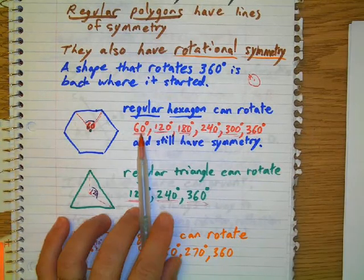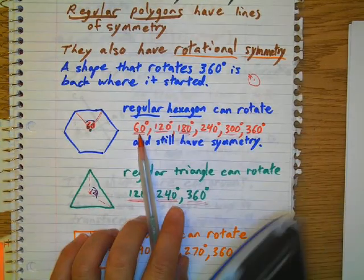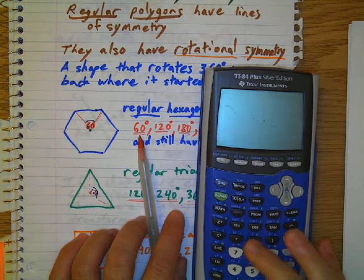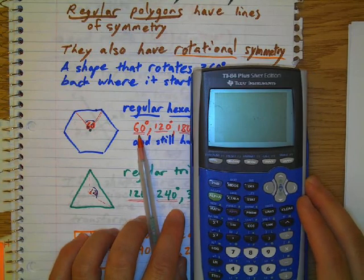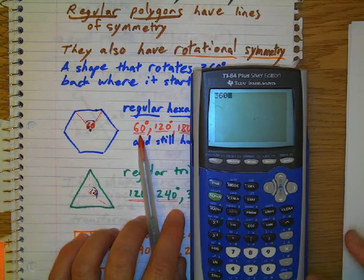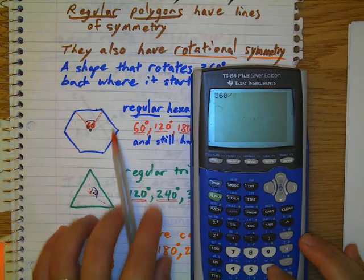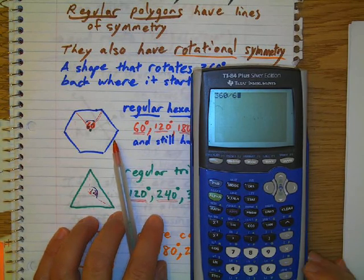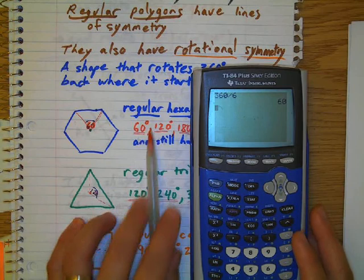How could I have gotten, another way could I have gotten 60? So if I did 360 divided by, how many sides are there? 6. So divided by 6, and I get, what do you know, 60 degrees.